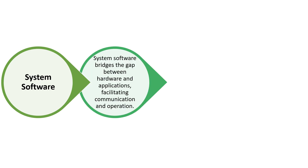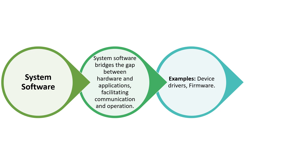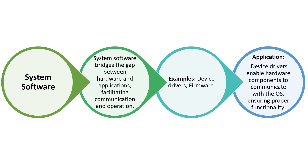Next is system software. System software is the general type that bridges the gap between hardware and applications, facilitating communication and operation. Examples are device drivers and firmware. Device drivers enable hardware components to communicate with the OS, ensuring proper functionality.